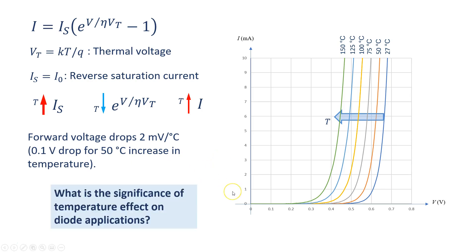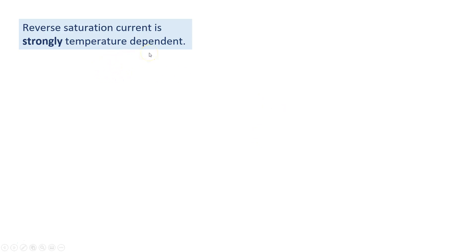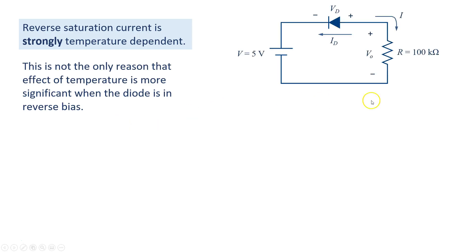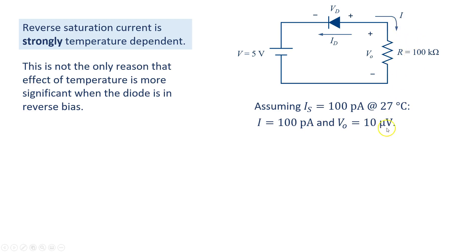That is a 0.1 volt drop for each 50 degrees Celsius increase in temperature. Now let's see what is the significance of the temperature effect on diode applications. The reverse saturation current is strongly temperature dependent, however this is not the only reason that the effect of temperature is more significant when the diode is in reverse bias. Let's see this in a circuit example. In this circuit the diode is biased in the reverse direction. Assume that at room temperature the reverse saturation current is 100 picoamps, so the current in the circuit is 100 picoamps and the voltage across the resistor is 10 microvolts — much less than the applied voltage of 5 volts. It cannot be even measured by many commercial voltmeters; the diode behaves like an open circuit.